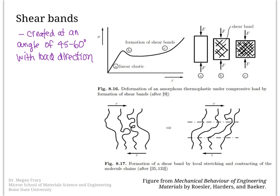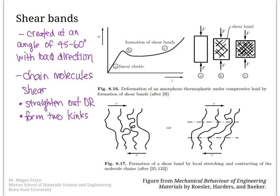At the molecular level, in shear band formation, we have chain molecules with shear stress applied. The chains essentially line up at an angle with respect to the load. The chain molecules are shearing — they either straighten out or form two kinks in the process. This results in a region that has aligned chains.